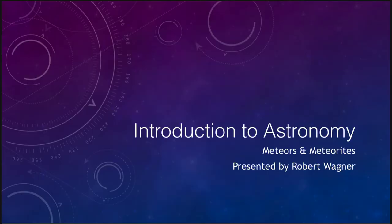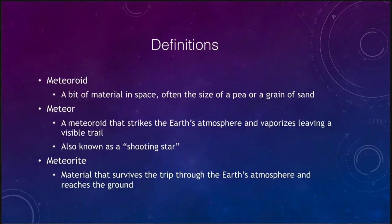Greetings and welcome to the introduction to astronomy. In this lecture we're going to talk about two different types of objects: meteors and meteorites. Now they have very similar names but they actually refer to quite different things, as we'll look at and discuss in this lecture. So let's go ahead and get started, and what we want to look at first are some definitions.